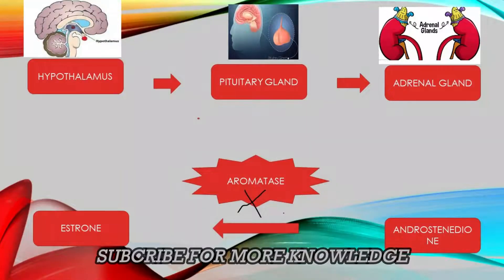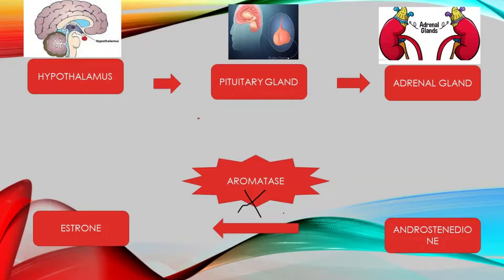Letrozole 2.5 mg is also used for infertility. The mechanism of action is: the hypothalamus sends a message to the pituitary gland, and the pituitary gland sends a message to the adrenal cortex. The adrenal cortex is responsible for hormonal control in the body and produces androstenedione, which is further converted into estrone with the help of the aromatase enzyme. Letrozole 2.5 mg inhibits this aromatase enzyme so no further estrone is produced.